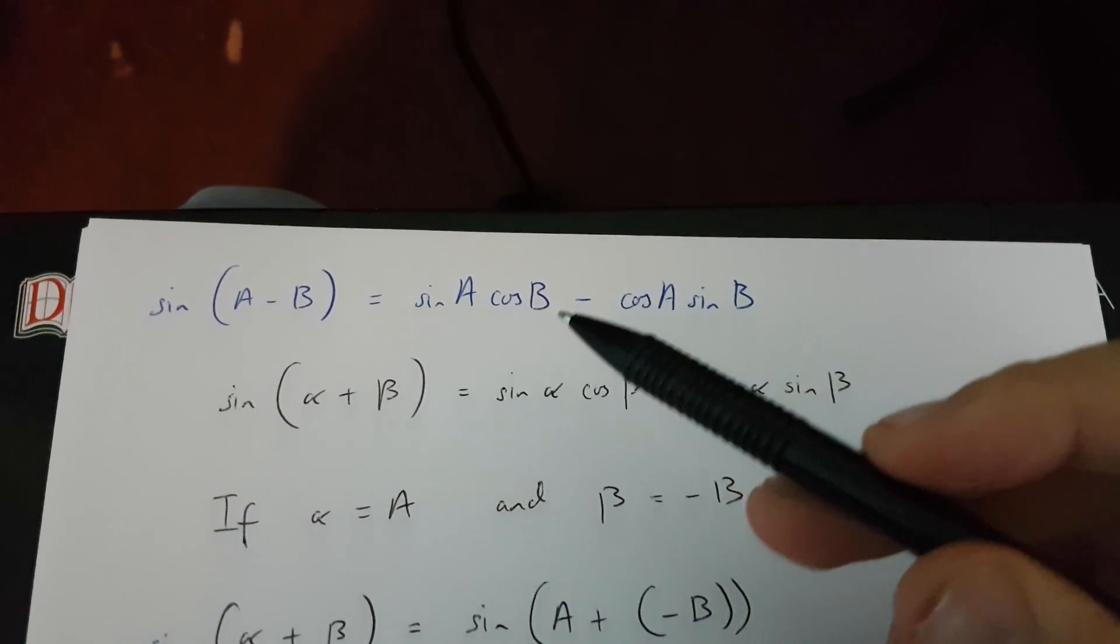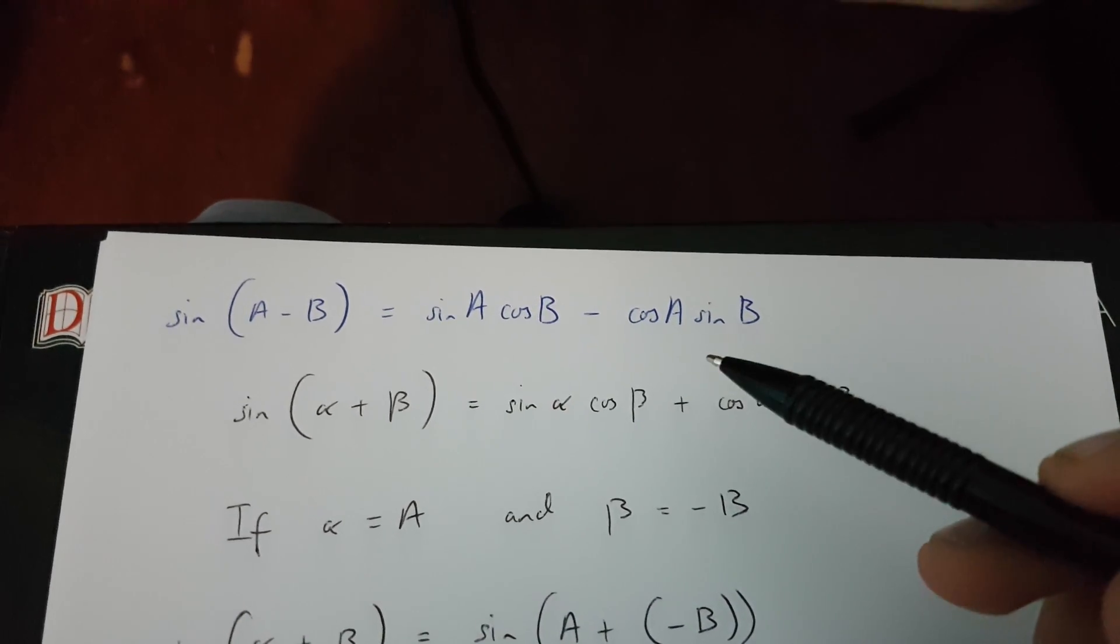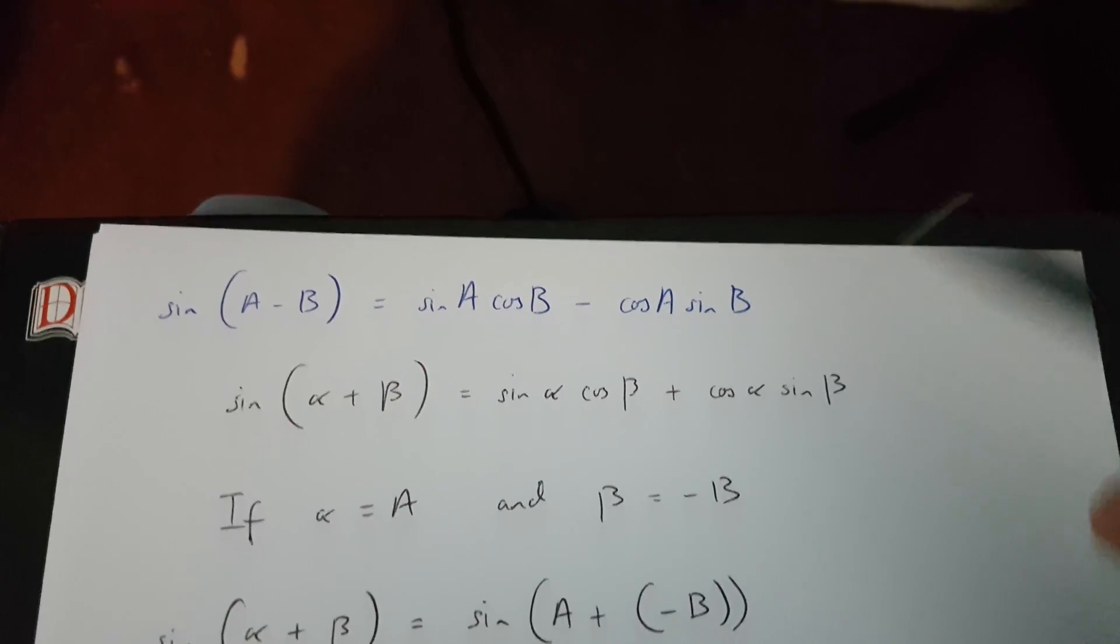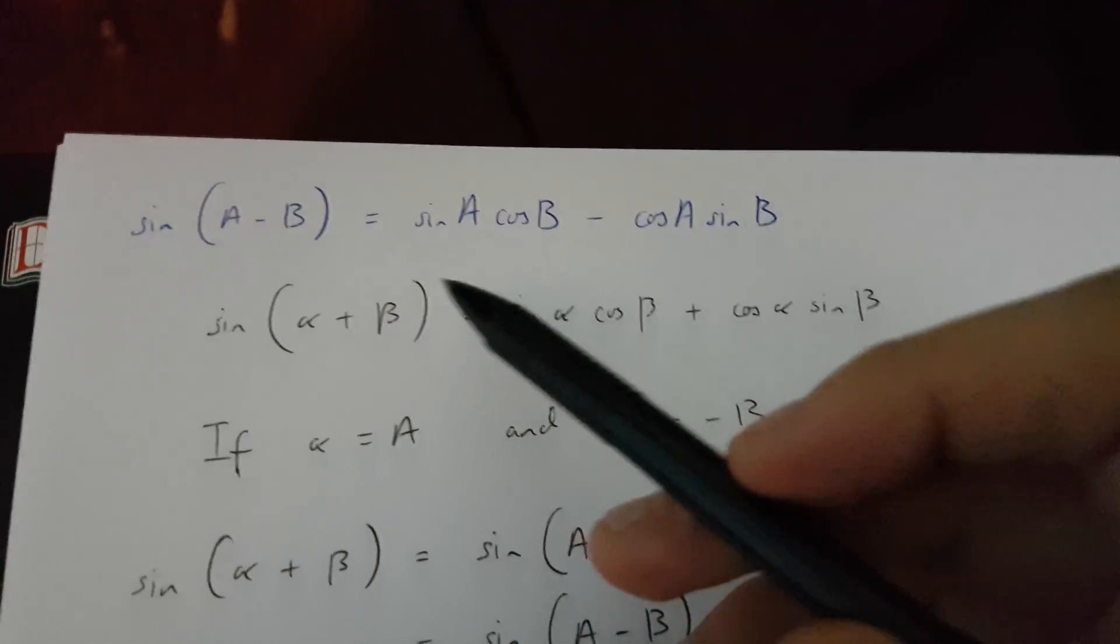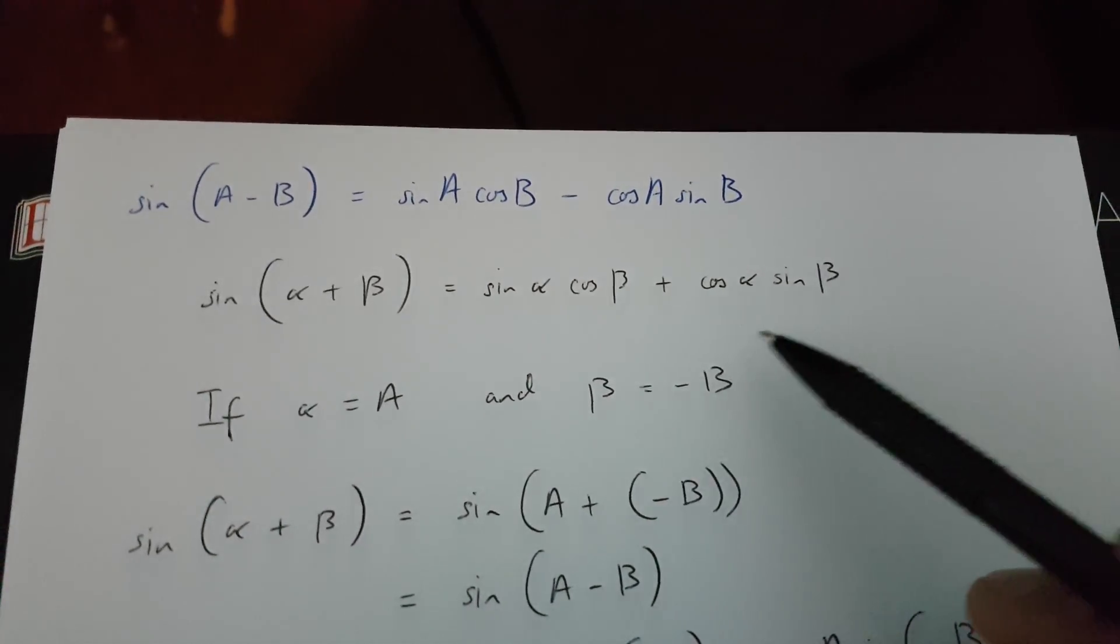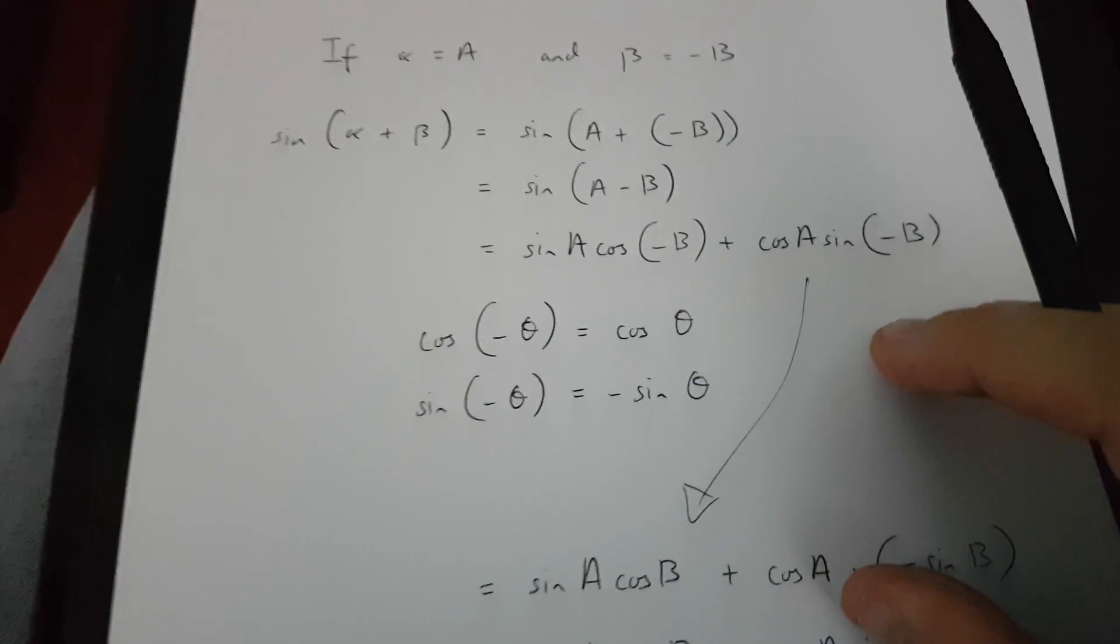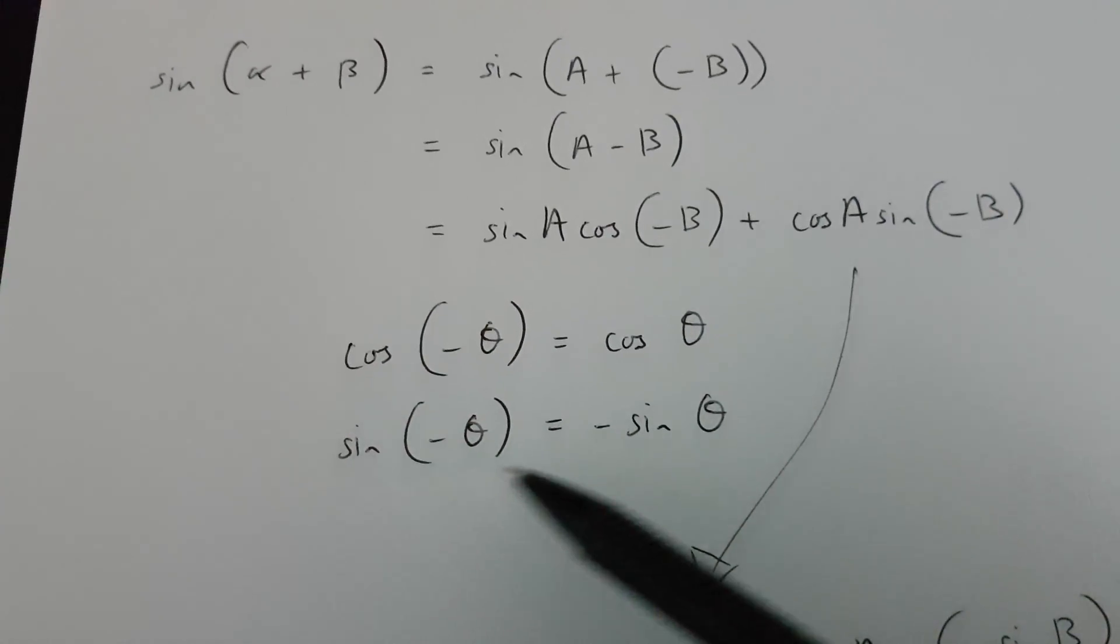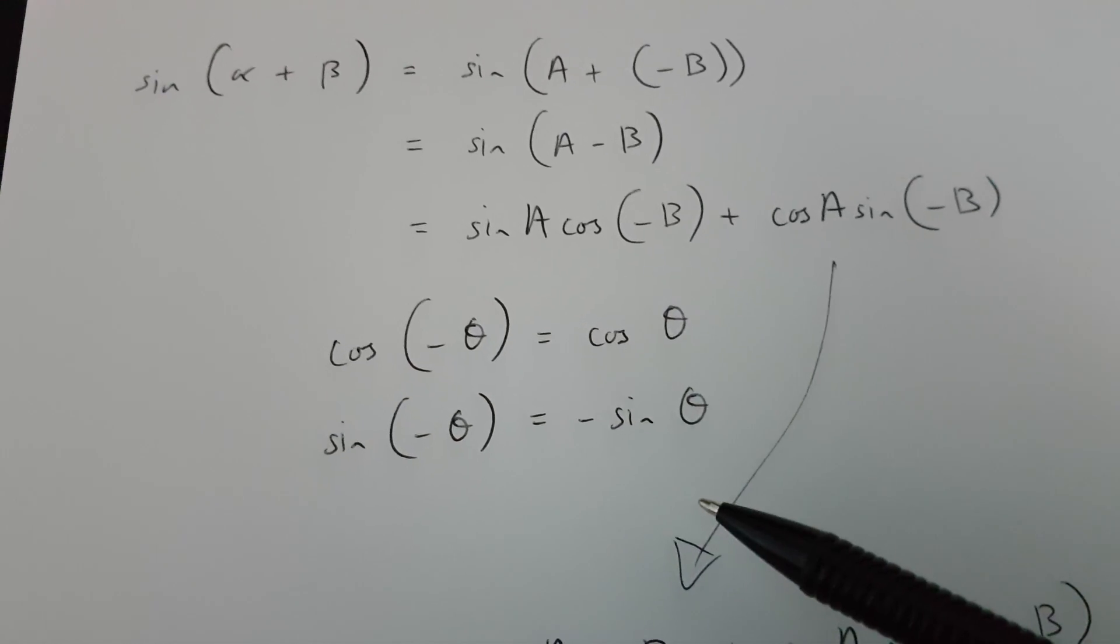Alright, so we've proven that sin(A - B) equals sin A cos B minus cos A sin B. This formula over here was used to produce this proof, and also these two bits of data.